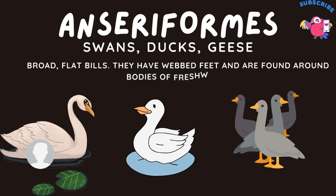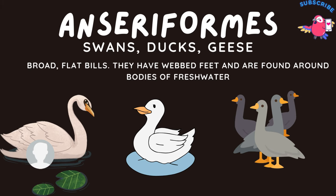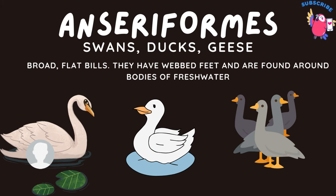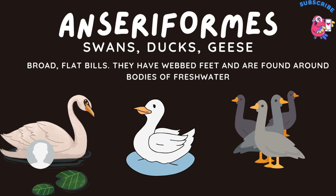Anseriformes. These types of birds include swans, ducks, and geese. They have broad, flat beaks. They have webbed feet and are found around bodies of fresh water.